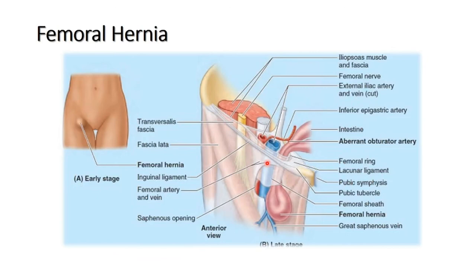Before discussing femoral hernia, we should know the femoral sheath — an extension of fascia from the abdomen into the thigh covering the initial portion of the femoral vessels. The femoral sheath has three compartments: lateral (containing the femoral artery), intermediate (containing the femoral vein), and medial (containing loose areolar tissue), called the femoral canal, which has an opening called the femoral ring.